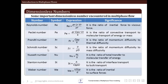Next is the Schmidt number, given by the symbol Sc. Its significance is that it is the ratio of momentum diffusivity to mass diffusivity, given by the ratio of viscosity divided by density and the diffusivity D. Next is the Nusselt number, given by the symbol Nu. Its significance is that it is the ratio of total heat transfer to molecular transfer of energy, given by the heat transfer coefficient multiplied by the length scale divided by conductivity. Next is the Stanton number, given by the symbol St. Its significance is the ratio of interface transport to bulk transport, given by the heat transfer coefficient divided by the product of specific heat, density, and velocity.